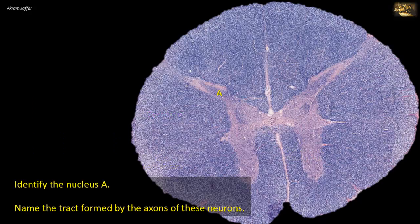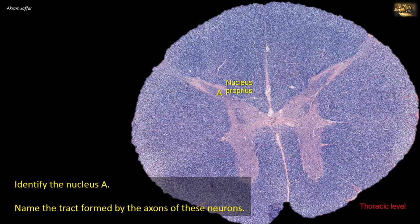Identify the nucleus and name the tract formed by the axons of its neurons. The nucleus is located in the dorsal horn of gray matter, just ventral to the substantia gelatinosa, which appears a little lighter. It is the nucleus proprius. The nucleus proprius extends throughout the cord and can be identified at all levels. Here it is a thoracic level section.